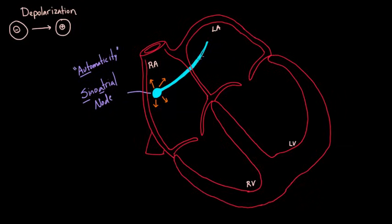The depolarization wave is moving slowly relative to how fast it could be moving if it went through a specialized band of tissue. This blue band I'm drawing is almost like a highway compared to that orange arrow, which is like a little road. That highway is going to take that same depolarization wave over to the other side, over to the left atrium, and all these cells begin to depolarize as well.